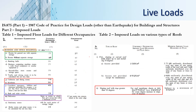For live load we use IS 875 Part 2 for imposed loads, Table 1, which gives imposed floor loads for different occupancies. Since this is an office building: rooms with separate storage — 2.5 kN/m²; rooms without separate storage — 4 kN/m²; cafeterias and dining rooms — 3 kN/m²; kitchens — 3 kN/m²; corridors, passages, lobbies, and staircases — 4 kN/m²; bathrooms and toilets — 2 kN/m²; and balconies — same as the rooms they access, minimum 4 kN/m².